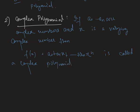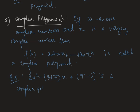For example, 2x² − (3 + 7i)x + (9i − 3) is a complex polynomial. Also, 3x² − 3 is a complex polynomial.